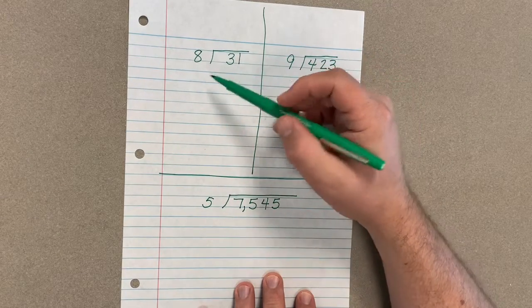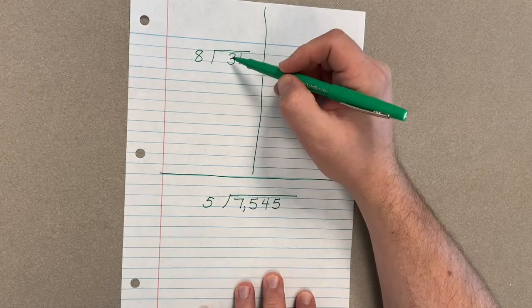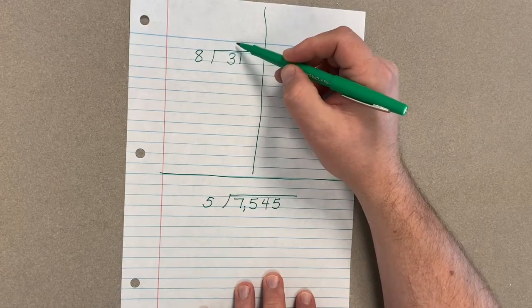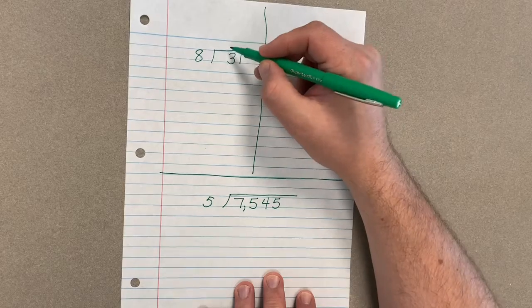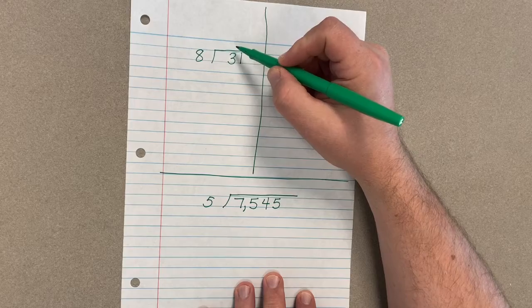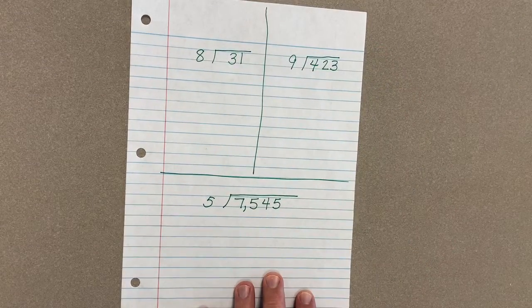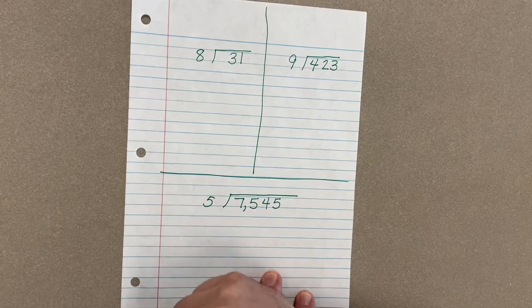We can think of this as 31 divided into groups of eight. Eight cannot go into three, zero times, so we could put a zero up there to hold our place. We don't really need to, but if that helps you out to remember that there's nothing there you can do that. Eight into 31, well...